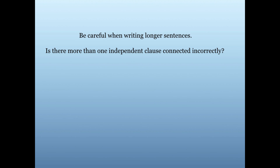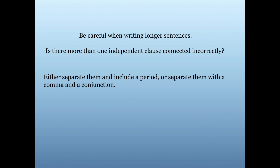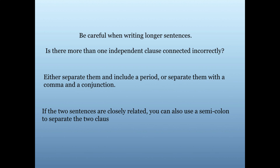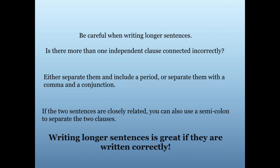Be careful when writing longer sentences. Whenever you find a very long sentence, check to make sure you've written it correctly. Always ask: is there more than one independent clause connected incorrectly? If there is, either separate them with a period, or separate them with a comma and a conjunction. If the two sentences are closely related, you can also use a semicolon. Writing longer sentences is great — if they are written correctly. I hope you've learned some ways to help correct your sentences. Happy writing!